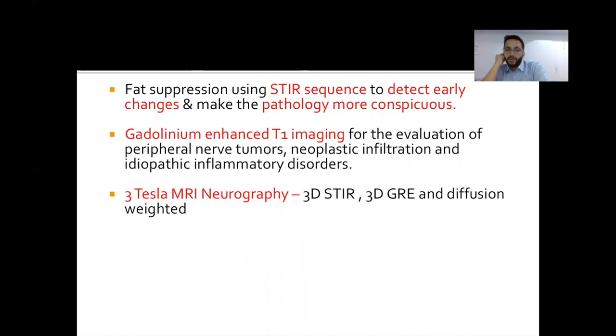And very importantly, 3 tesla MR neurography. So when we speak of MR neurography, we need to take 3D sequences like 3D STIR sequence, 3D GRE and nowadays 3D diffusion sequences. So this enhances the imaging and will help us in getting reformatted images.